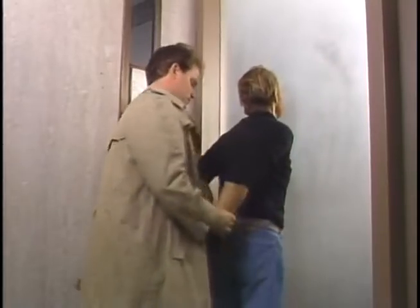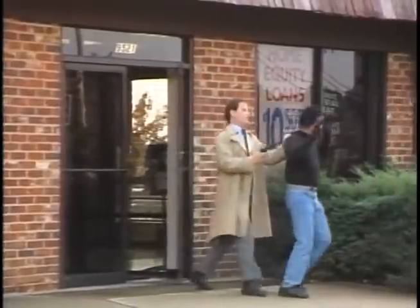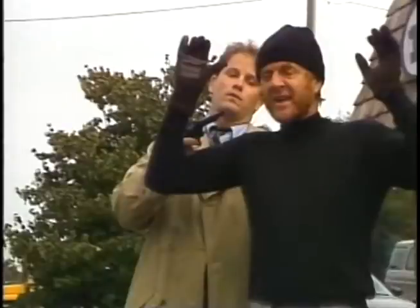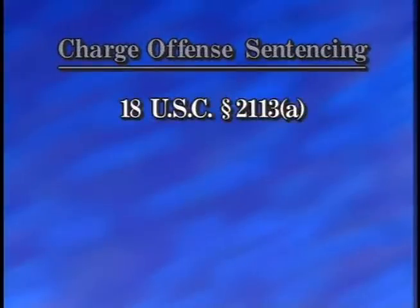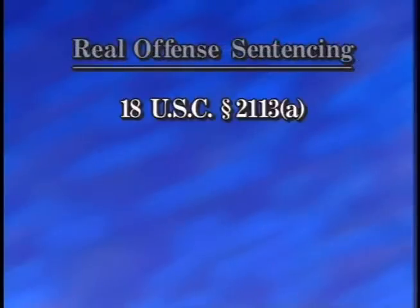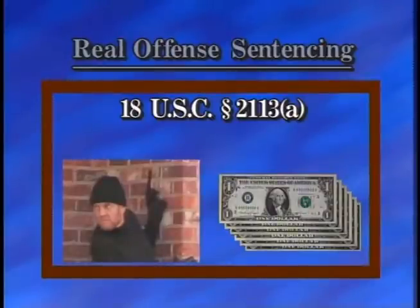Let's use our hypothetical case, involving a defendant who robs a federally insured bank while armed with a pistol, to illustrate these two approaches to sentencing. During the robbery, defendant Hanson brandishes the pistol but does not fire it or assault anyone with it. As Hanson leaves the bank, he is arrested by an off-duty police officer. $12,000 of the bank's money is found on Hanson's person during a search incident to his arrest. Hanson is charged only with bank robbery and is later found guilty of that offense. In charge offense sentencing, his sentence could be based on nothing more than his conviction for violating Title 18, Section 2113A, the bank robbery statute — the brandishing of the pistol and the amount of money taken would not necessarily be considered. But with real offense sentencing, Hanson would be sentenced on the basis of all harmful conduct, so the brandishing of the pistol and the amount of money involved would be factored into the sentence.